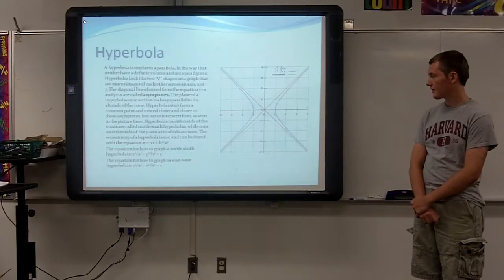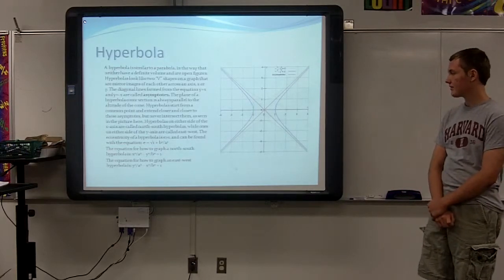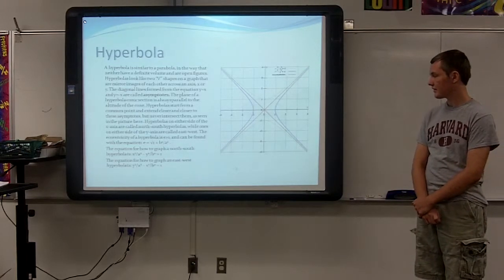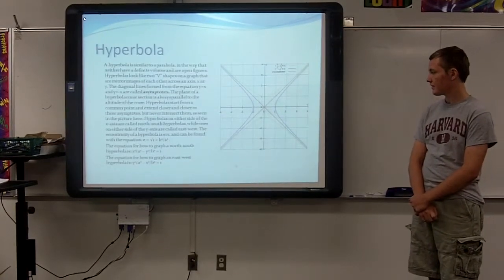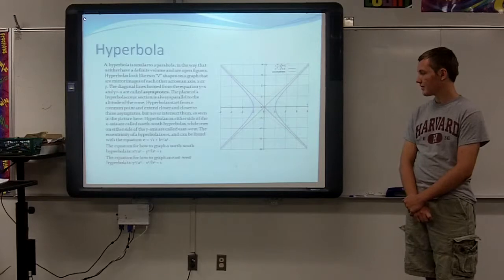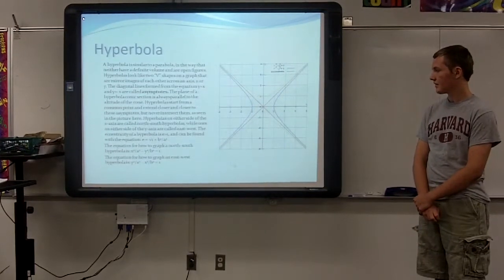The equation for how to graph a north-south hyperbola is x squared over a squared minus y squared over b squared is equal to 1. And the equation for how to graph an east-west hyperbola is y squared over a squared minus x squared over b squared is equal to 1.